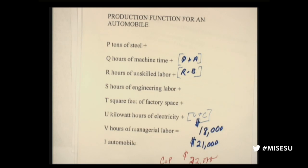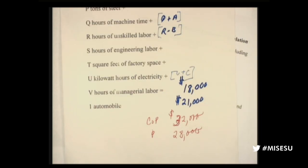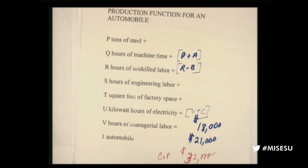How do you know what technology to use or how many cars to produce? The socialist planner might know he needs p tons of steel, plus q hours of machine time, plus r hours of unskilled labor, plus s hours of engineering labor, plus t square feet of factory space, plus u kilowatt hours of electricity, plus v hours of managerial labor — and you get one automobile. Socialism never had a problem with technology — they sent a man into space before the United States did. The problem is knowing how to rationally allocate resources.